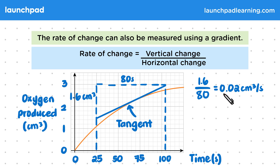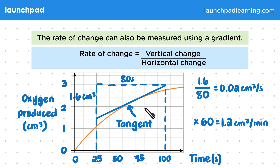We want to work this out per minute, so again we're going to multiply by 60 to give us 1.2 centimetres cubed per minute. You can use a tangent at multiple points on a slope to work out how the rate changes over time.